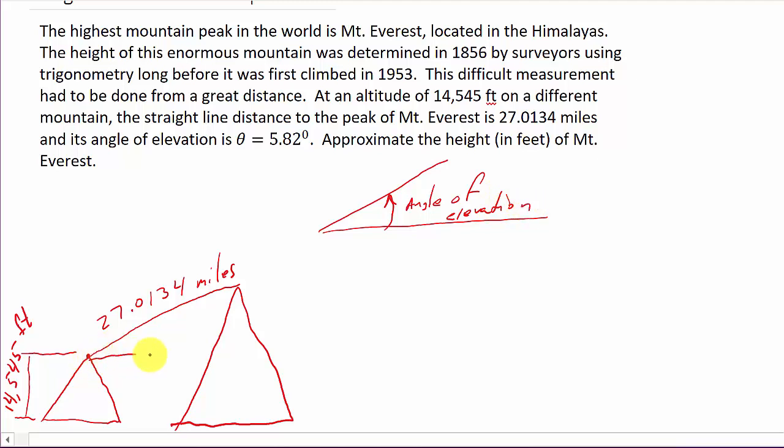So if we draw a straight line here, we come up here, we have a right triangle. This angle of elevation here is 5.82 degrees, and they want to know the height of Mount Everest. Well, we know that this distance here, which we have here, is 14,545 feet.